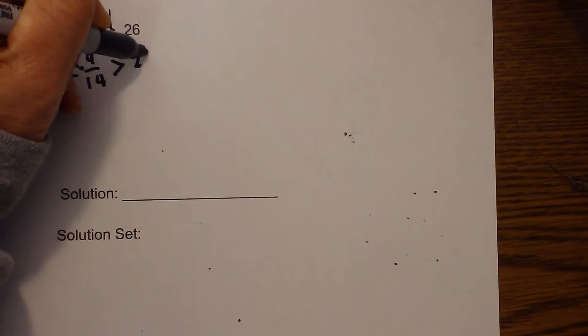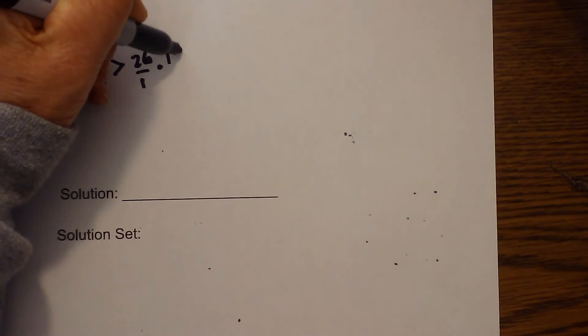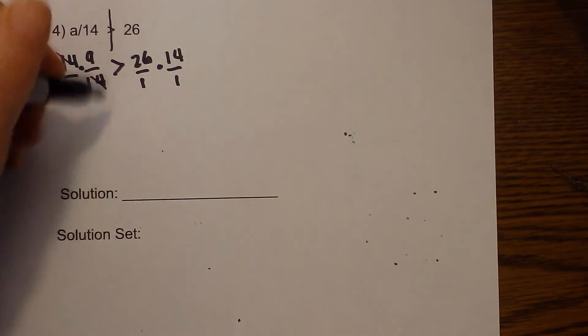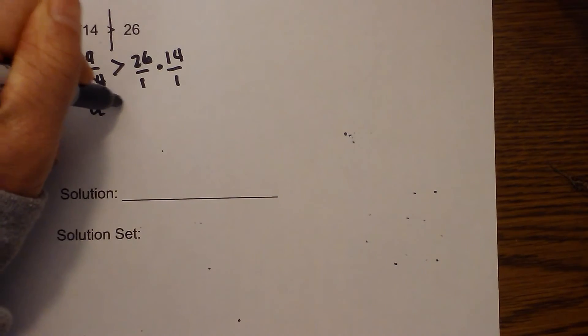It is greater than 26. And let's just keep it consistent. We will do 26 over 1 times 14 over 1. So now we have multiplication. These two cancel, so we are left with a is greater than.